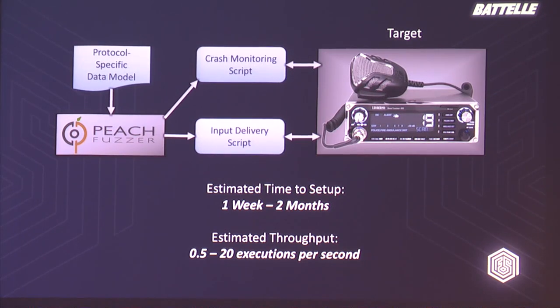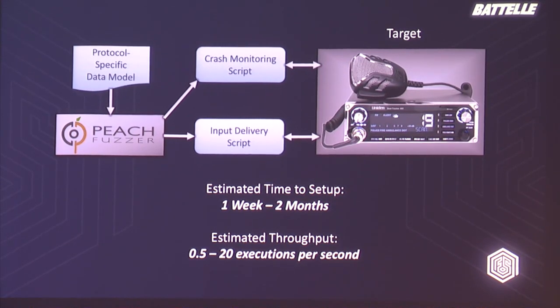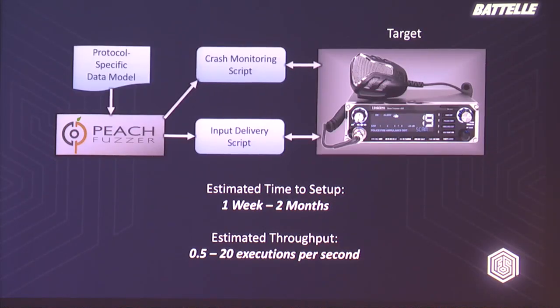This process has some problems. The time to set it up we estimate at between one week and two months depending on the complexity of the target. Even once you get it up and running, throughput is extremely slow — in a very optimistic case, maybe half to 20 executions per second, sometimes even slower. After using this setup fairly successfully for a number of years, AFL became our go-to for normal command line applications, emulation improved, QEMU got more solid, Unicorn came along, and we started rethinking how we do this. What we came up with is AFL Unicorn.